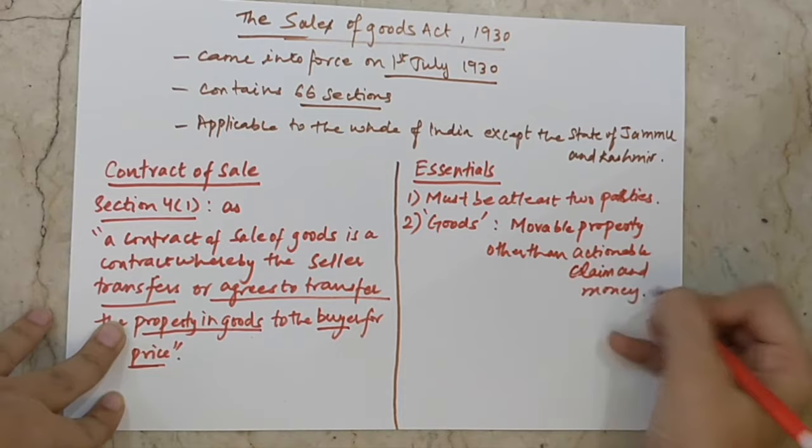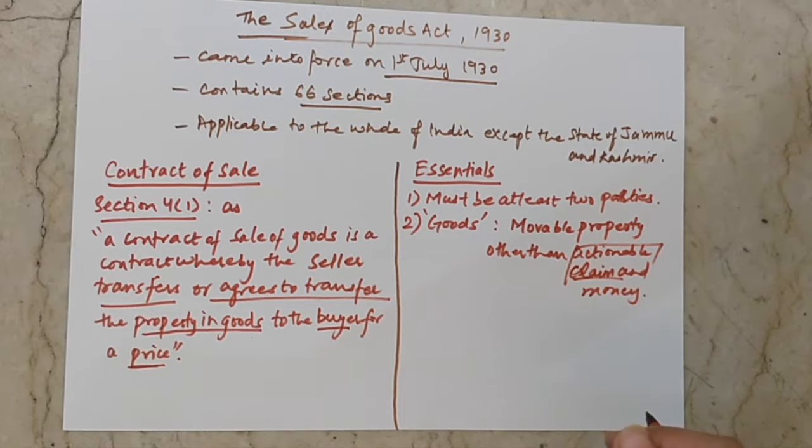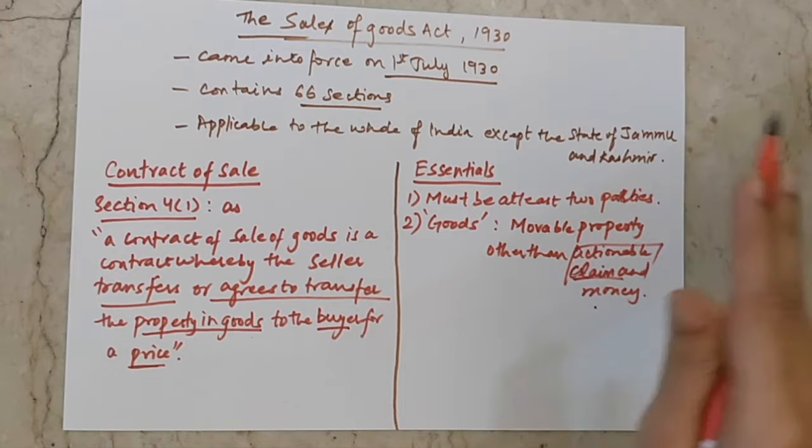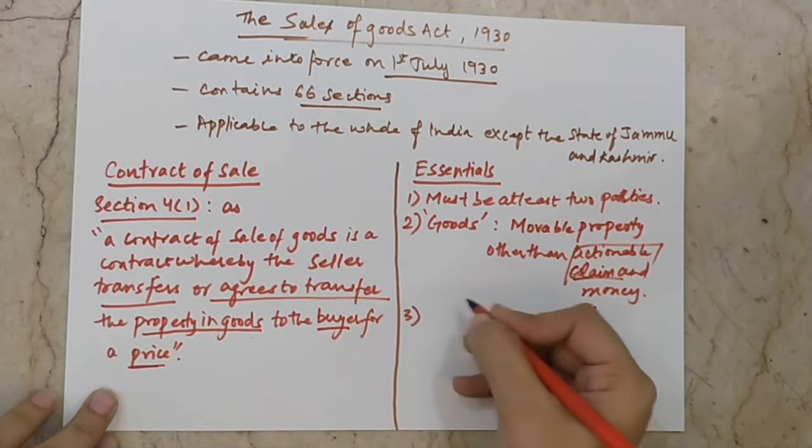Goods include moveable properties other than actionable claims and money. Actionable claims are those which we need to prove or claim — such as a debt. All such claims that we need to claim are called actionable claims. Both actionable claims and money are excluded from the definition of goods.